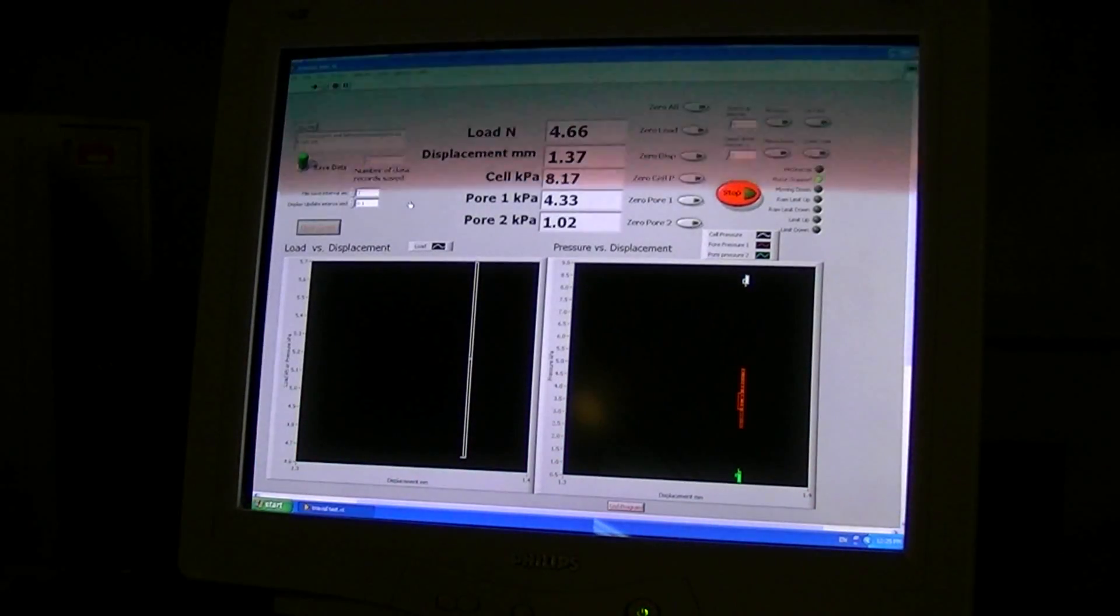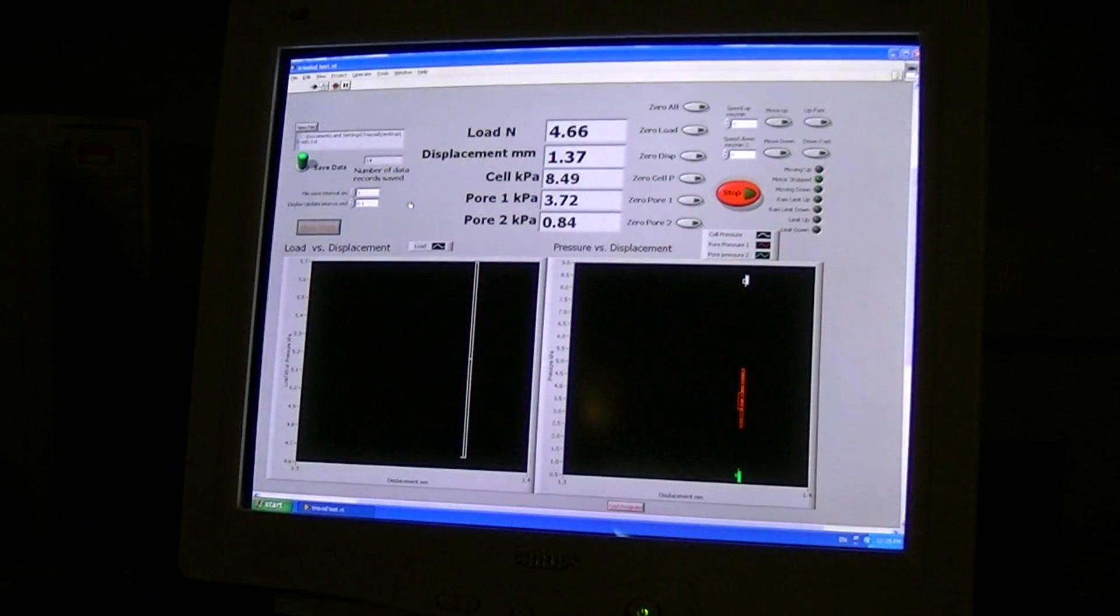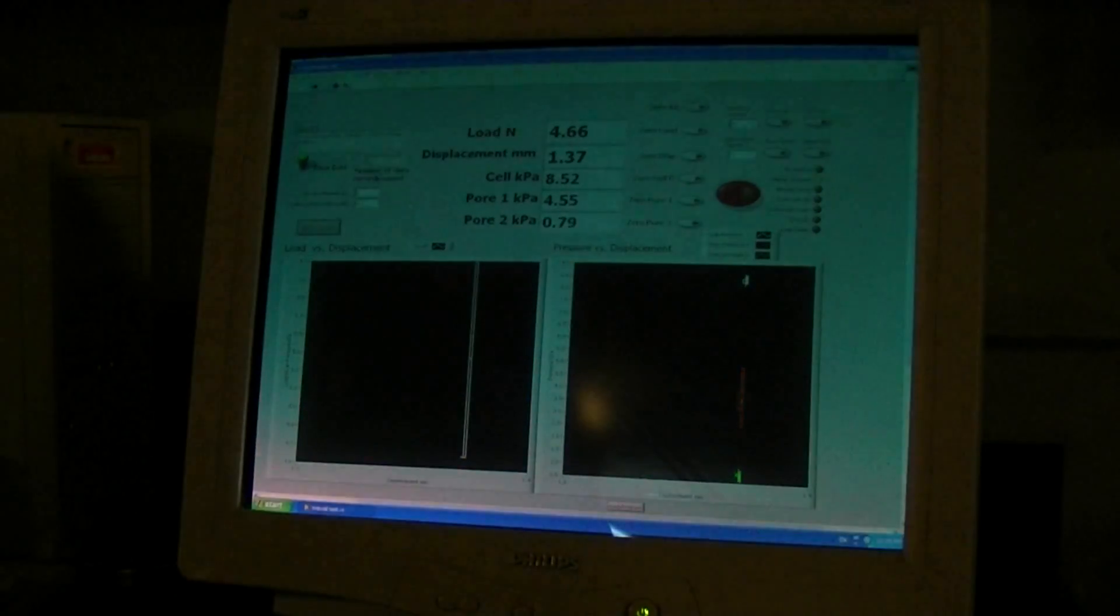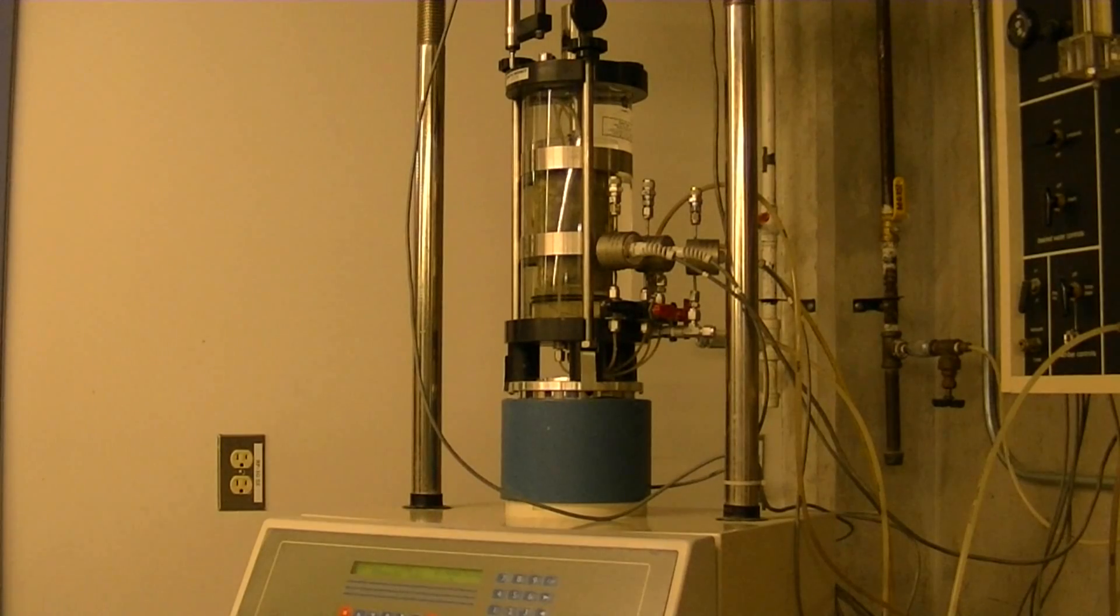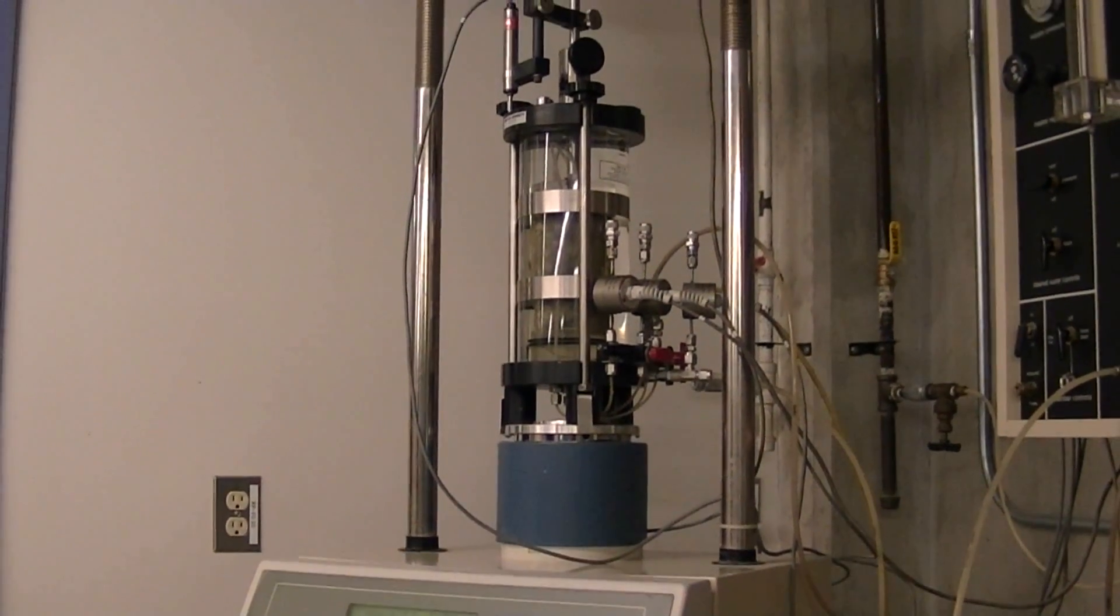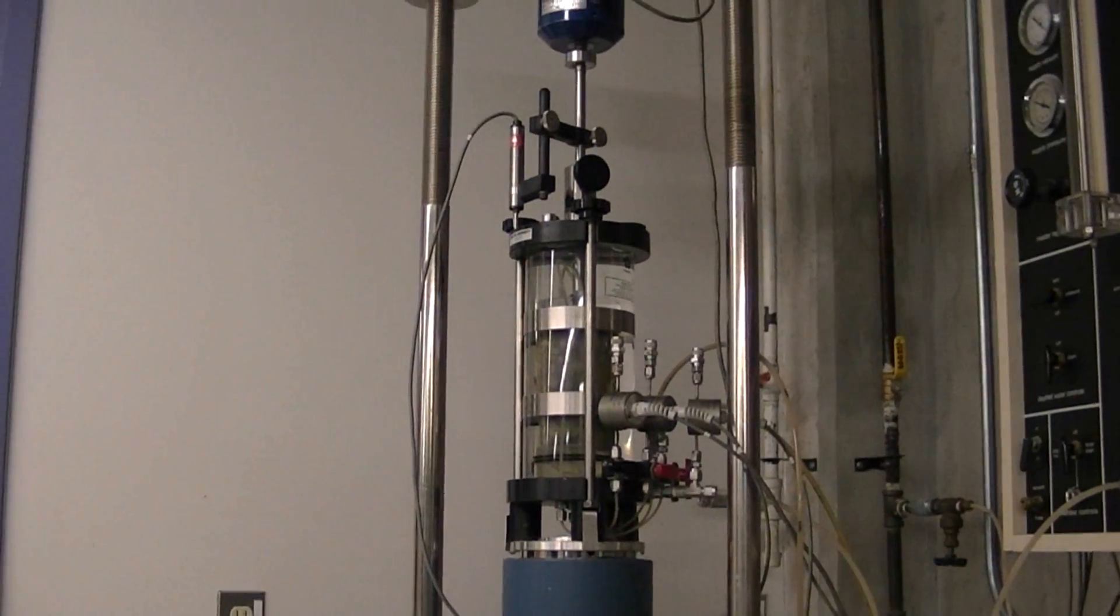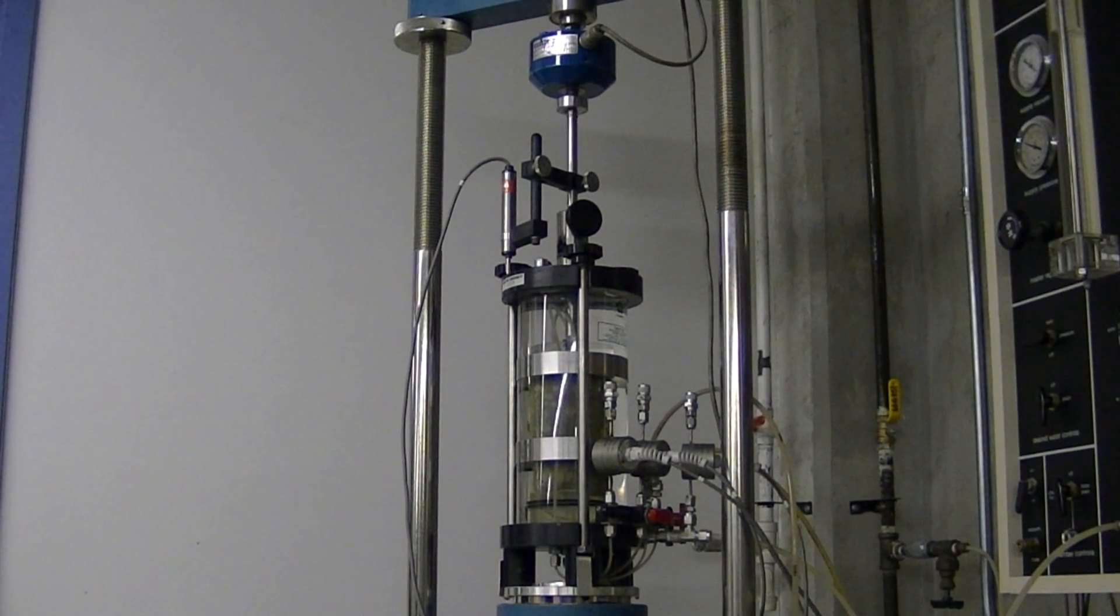We've set up the software so that it's recording the data from the triaxial test. Every test is going to have a confining pressure. That'll be determined by exactly what test you want to do, where the sample came from, how deep it was, all those factors. For today's example, we'll ramp up the cell pressure to approximately 200 kPa.